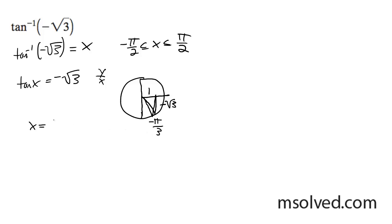So in this case, our x, our value, our solution is going to be negative pi over 3. That's it.